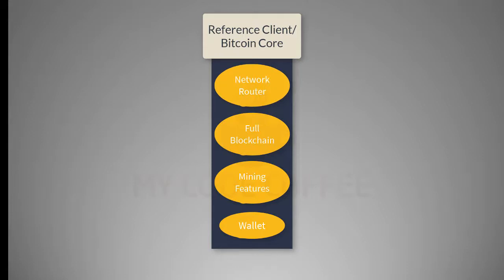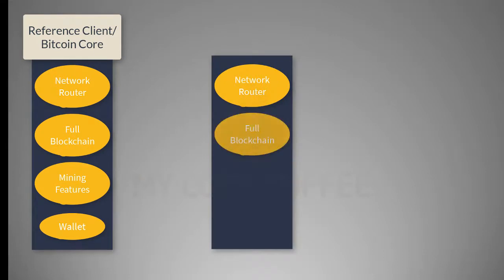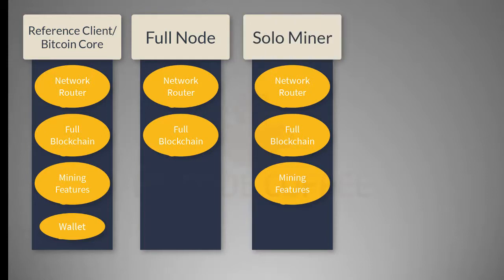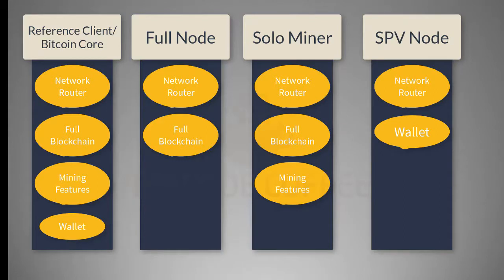Some nodes choose to have only certain features. For example, if a node has only a full blockchain along with a network routing component, it is called a full node. If a node has a mining component along with full blockchain and a networking component, then it is a solo miner, which means it can do mining on its own without participating in any mining pool — we will learn about mining pools later. Similarly, if a node has only a wallet along with a networking component, then it is a lightweight wallet or simplified payment verification node, known as an SPV node.